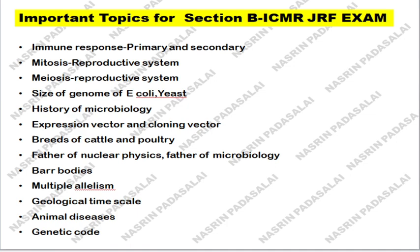For studying the history of microbiology you can refer to the Prescott book — know what scientists did for microbiology. Know about Koch's postulates. Next, know about expression vectors and cloning vectors. Next, the breeds of cattle. Next, know about the father of nuclear physics, father of microbiology, father of chemistry, father of biotechnology, and similar fields. Next, know about Barr bodies with special focus on female, male, and transgender. Next, know about geological time scale — this is highly important — like when did the dinosaurs become extinct and what is the age of reptiles.